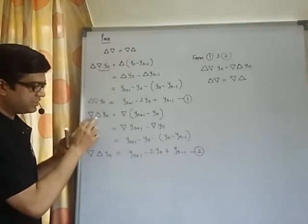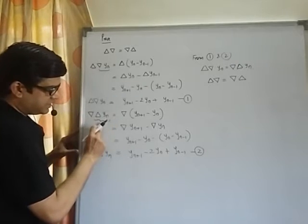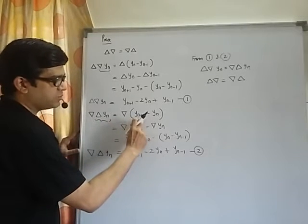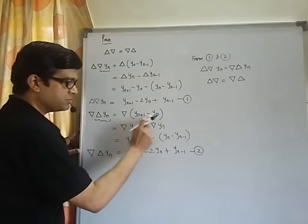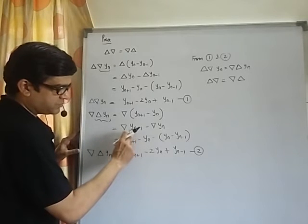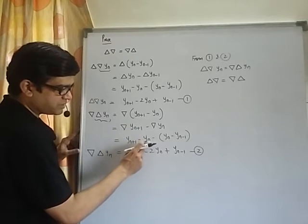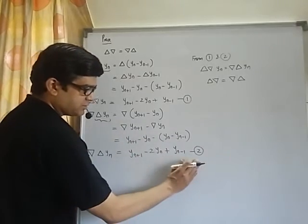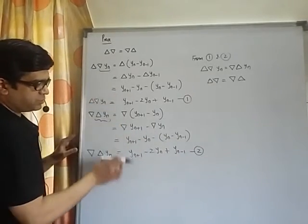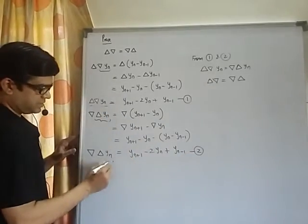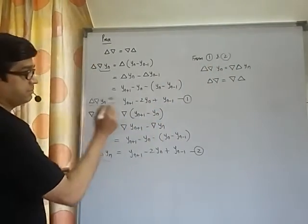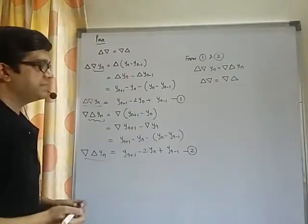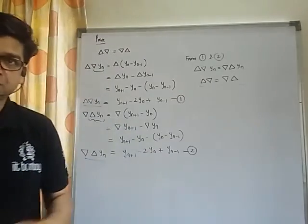Now consider ∇δyₙ. Delta yₙ gives the next value minus the current value: yₙ₊₁ - yₙ. Distributing nabla on both terms, nabla gives current value minus previous value. Simplifying, we get the same right-hand side as before. Comparing equations one and two, the RHS are the same, so the left-hand sides are also the same. Dividing throughout by yₙ, we get δ∇ = ∇δ. Please note this down.